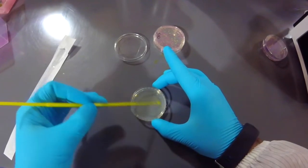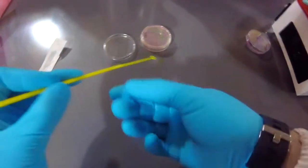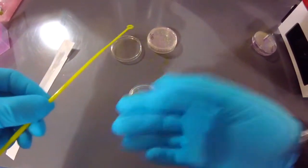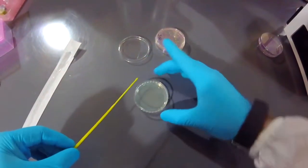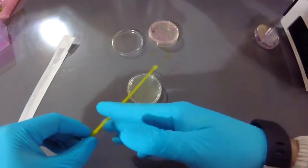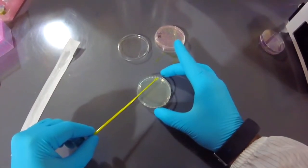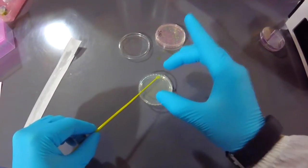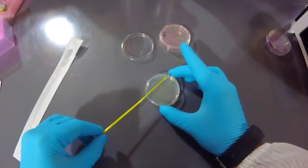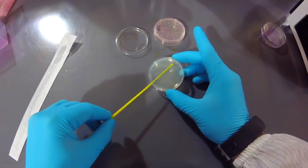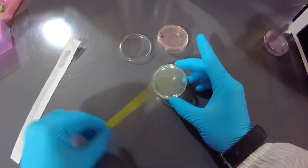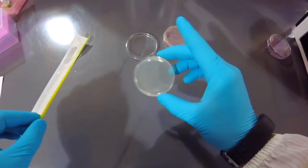All right, so now I've done my first line, and if you've done the triple streak, which you probably have, that would be the equivalent of using your first loop and then discarding it. So I'm going to turn this, and I'm going to only use this side now, and I'm going to make sure the other side does not touch, and the tip does not touch, the agar. And I'm going to do the second line by going through this first one here. So I'm going to go through, and I'm going to go a little bit smaller.